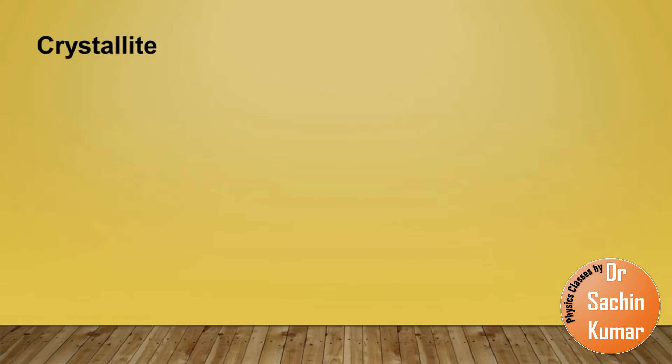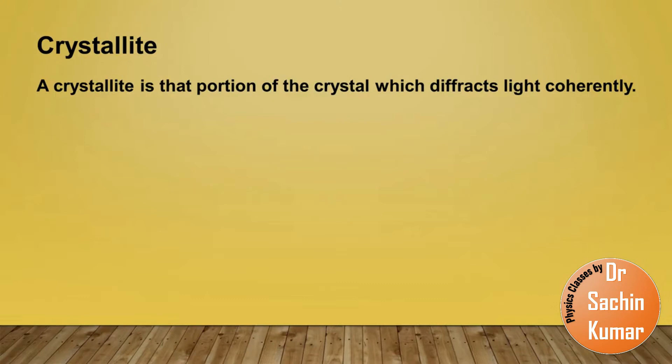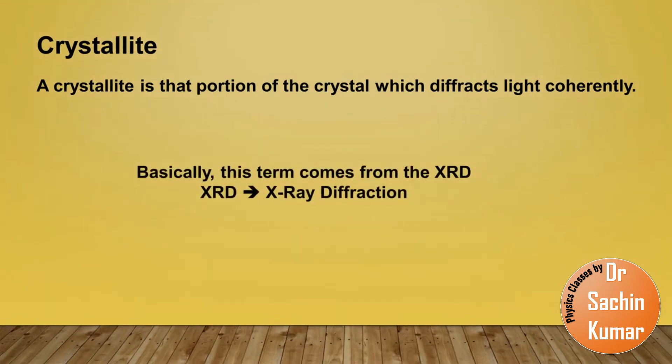So here we start with the crystallite. What is a crystallite? By definition, a crystallite is a portion of the crystal that diffracts light coherently. This definition comes from the XRD, x-ray diffraction.